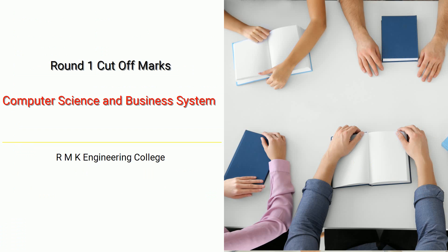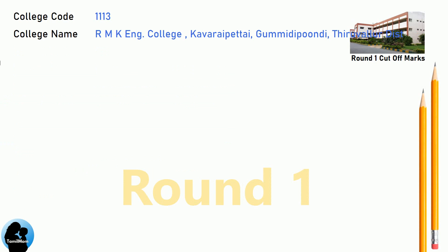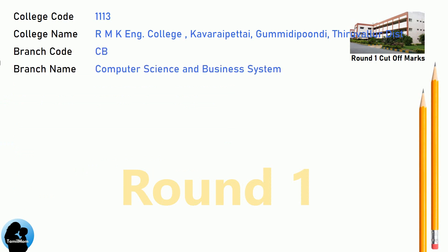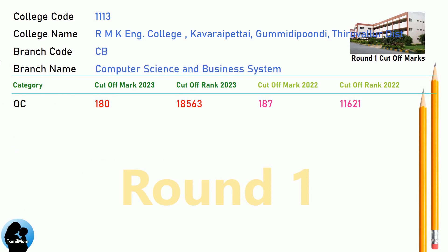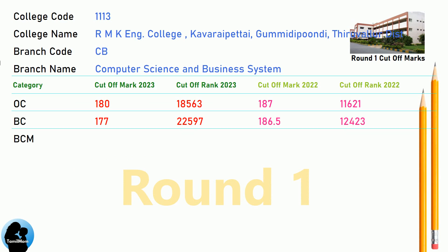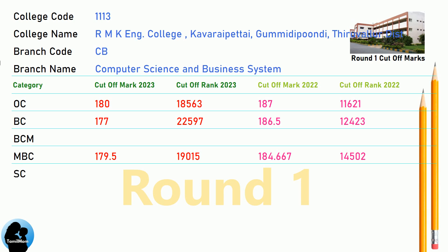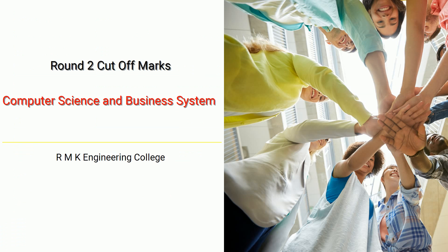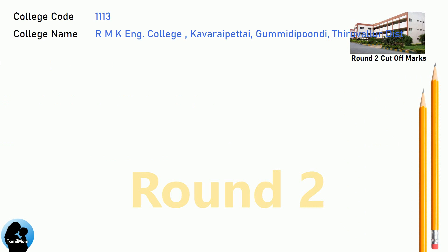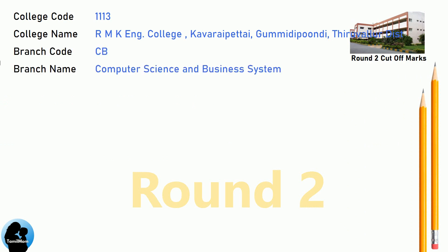DNA Round 1 Cut-Off for RNK Engineering College in Computer Science and Business System. DNA Round 2 Cut-Off for RNK Engineering College in Computer Science and Business System.